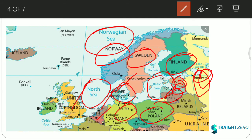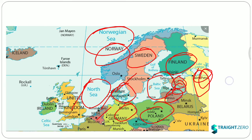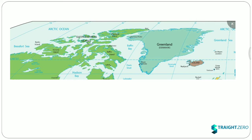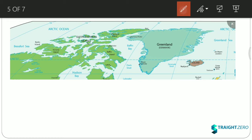Moving ahead to the Arctic region, there are many small seas here. The first important one is the Beaufort Sea, shown in green on the map. This area is Canada.